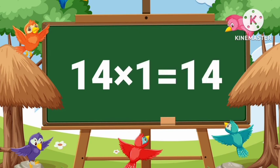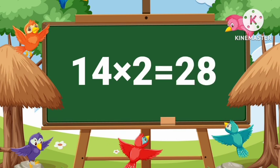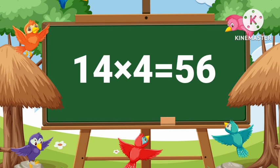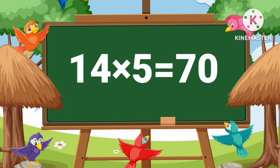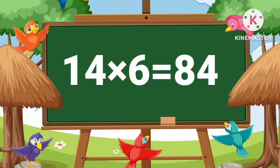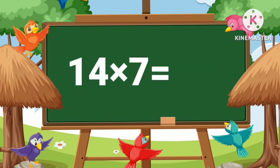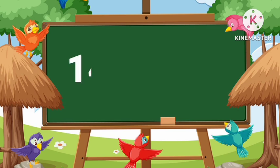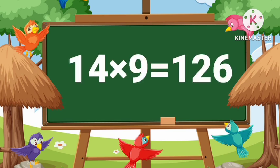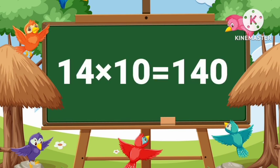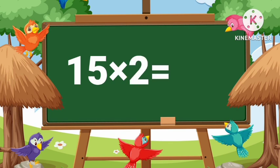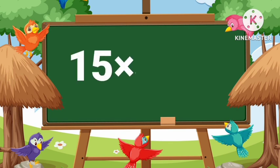Fourteen ones are fourteen. Fourteen twos are twenty-eight. Fourteen threes are forty-two. Fourteen fours are fifty-six. Fourteen fives are seventy. Fourteen sixes are eighty-four. Fourteen sevens are ninety-eight. Fourteen eights are one hundred twelve. Fourteen nines are one hundred twenty-six. Fourteen tens are one hundred forty.